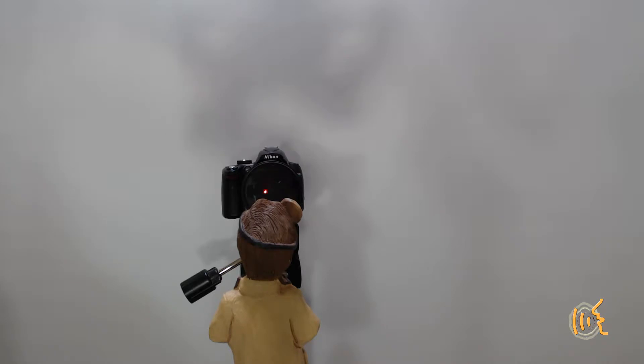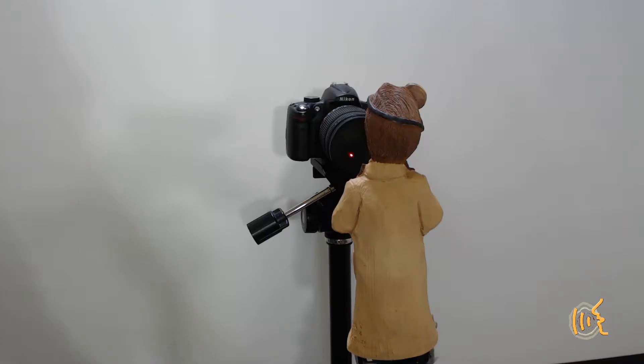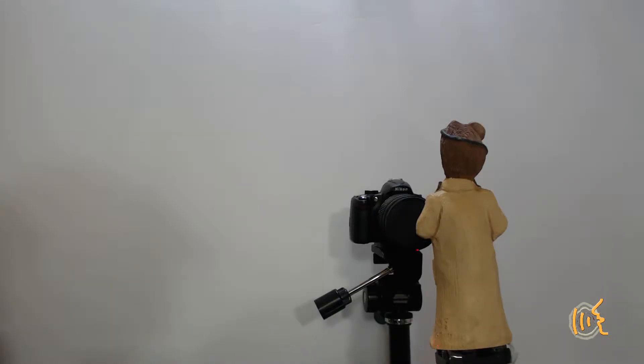Let me try to demonstrate this with a laser pointer from behind the statue. The laser light represents the straight rays of light reflected off the front of the statue, reaching the lens. So light from the head and the face travel straight to the camera lens. Light from the left side of the statue travels straight to the camera lens. Light from the right side of the statue travels straight to the camera lens. And light from the bottom of the statue travels straight to the camera lens.